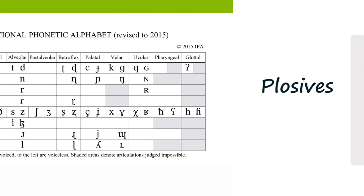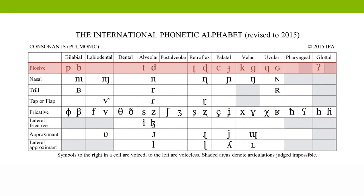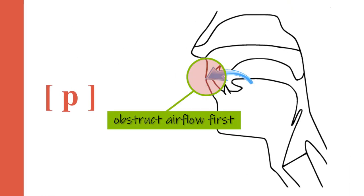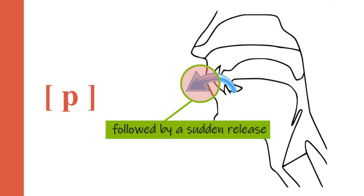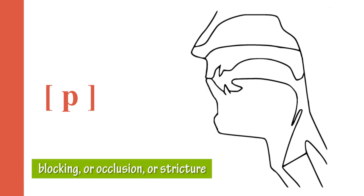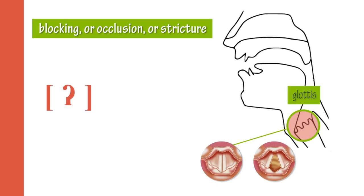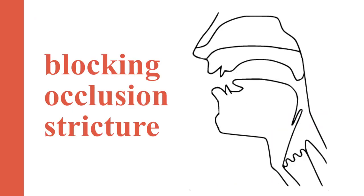For example, the first plosive in the chart is 'puh.' You obstruct the airflow using your lips, and then you release it suddenly — 'puh' — which is explosive. The blocking, or occlusion (the more technical term), or stricture, can be made with the tongue tip, tongue blade, tongue body, the lips, or the glottis. You can use any of these articulators to create the occlusion.